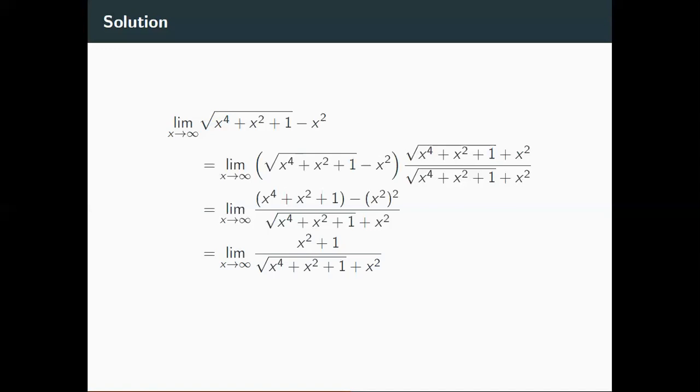Now we have a polynomial over an almost polynomial situation. Now the way you deal with this typically is you divide out by the degree of the denominator. In this case, because this is not actually a polynomial, it doesn't really make sense to talk about degree, but we kind of have an idea for what this degree should be.